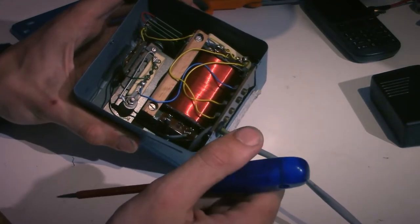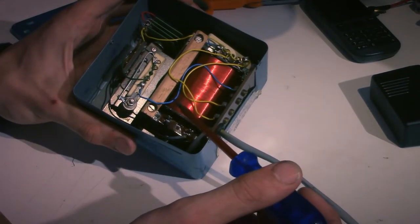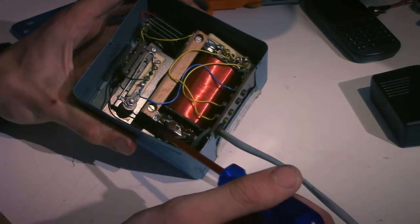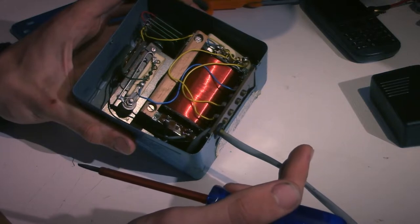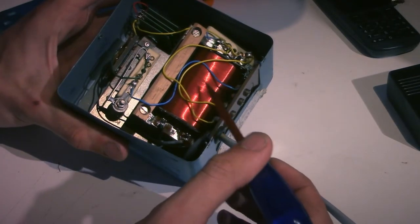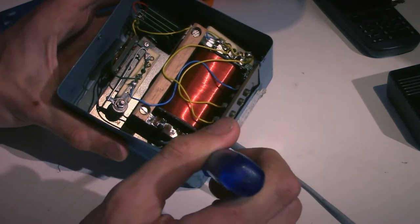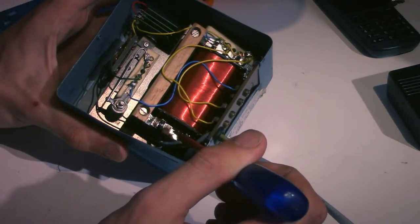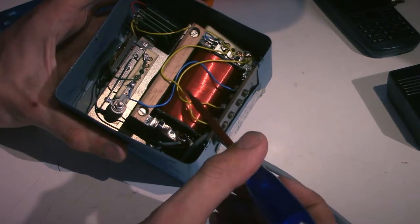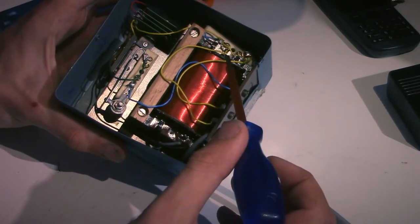Now in case you don't know what a transformer is, it's a device that transforms a certain AC voltage into a different AC voltage. So in this case, what the transformer does is it takes the high voltage AC from the mains input from the power outlet, and it transforms that into a much lower voltage AC.